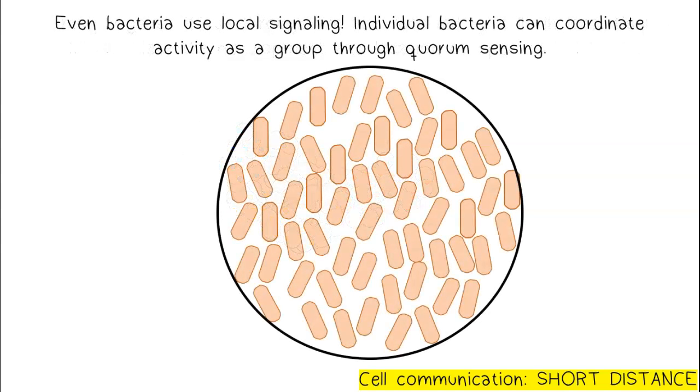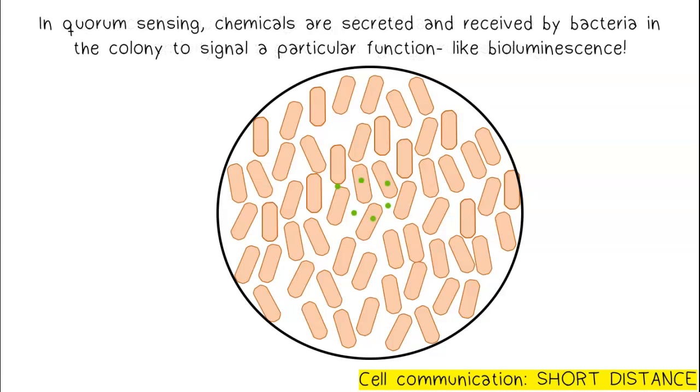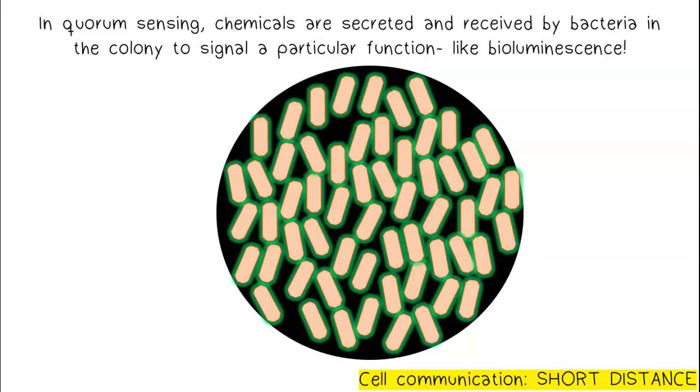Even bacteria use local signaling. Individual bacteria can coordinate activity as a group through quorum sensing. In quorum sensing, chemicals are secreted and received by bacteria in the colony to signal a particular function, like bioluminescence.